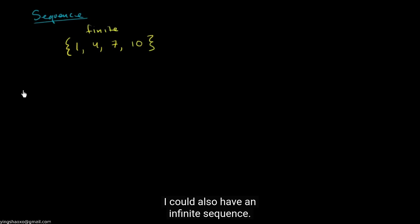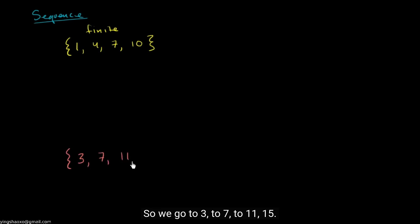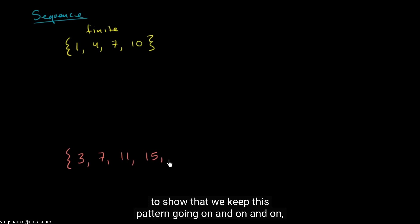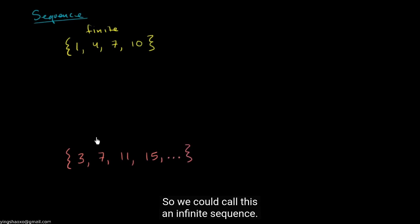I could also have an infinite sequence. For example, let's say we start at three and we keep adding four: three, seven, eleven, fifteen. You don't always have to add the same thing — the sequences where you keep adding the same amount are called arithmetic sequences, which we'll explore in more detail. To show that the sequence is infinite, I'll put three dots, meaning we keep going on and on. So we call this an infinite sequence.